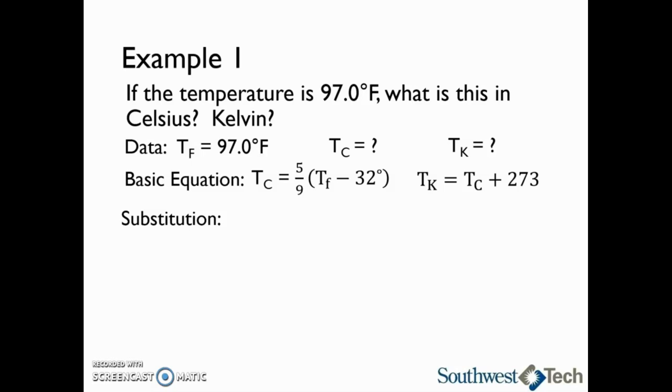Next, we can substitute to find the Celsius temperature. We have 5/9 times the quantity 97.0 degrees minus 32 degrees. This gives us a Celsius temperature of 36.1 degrees Celsius.